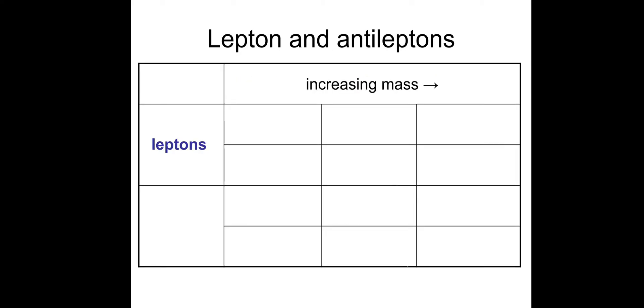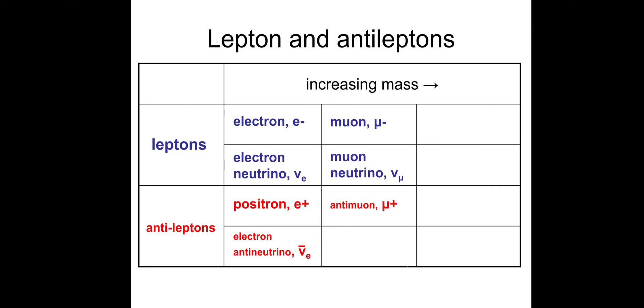Leptons include electrons and muons in order of increasing mass. There is another one, the tau or tau muon, but we don't need to discuss that for A-level study. The associated neutrino with the electron is the electron neutrino, and the associated neutrino with the muon is the muon neutrino. Anti-leptons are the opposite: positrons with electron anti-neutrinos, and anti-muons with muon anti-neutrinos. The bar above the symbol just means anti, the anti-particle equivalent.